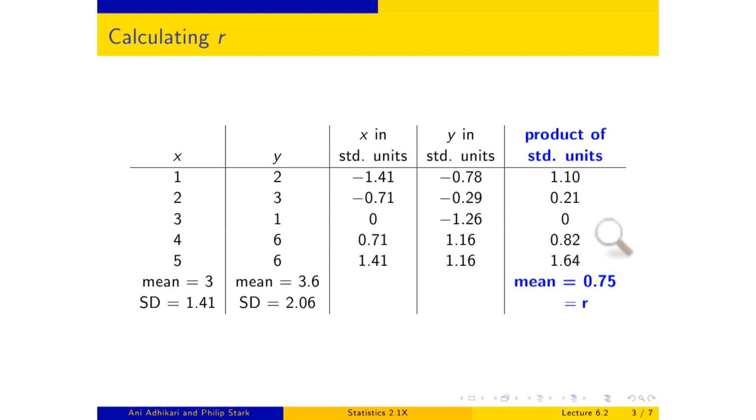Now, as to why this produces something that measures linearity, it is much too hard to explain in algebraic detail at this level. One of the things you ought to be able to see, though, is that it will, in general, give you the right sign. So let's take a look at these two pairs of standard units. That's when x was 5 and y was 6. Both of these values were above average. Well, if both are above average, then both standard units will be positive. And so when you multiply them, you'll get a positive product. Here, both the x and the y were below average, and so when we multiply the two negative standard units, we again get a positive.